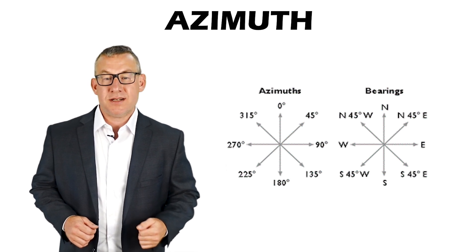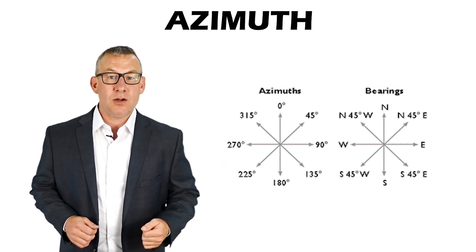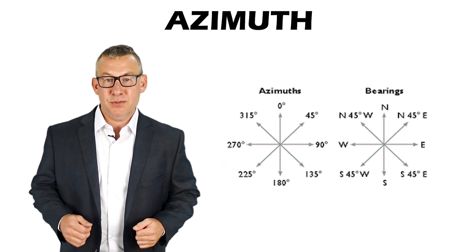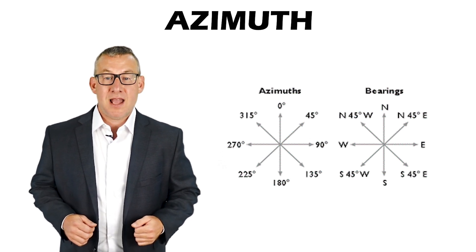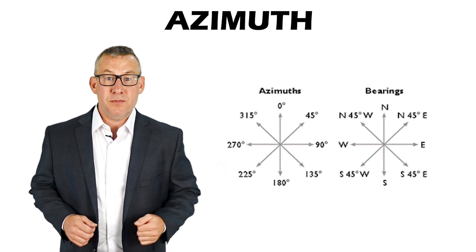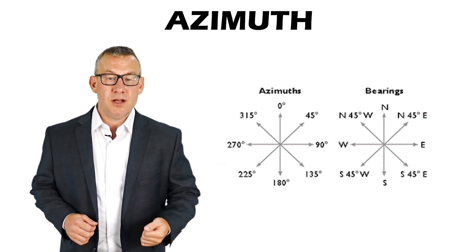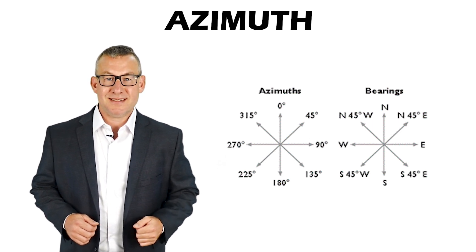Azimuth is the direction measured in degrees clockwise from north on an azimuth circle. An azimuth measure ranges from zero to 359.9 degrees.